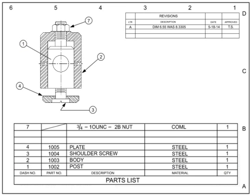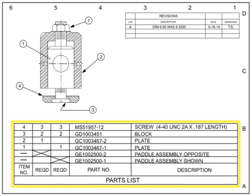Other useful information typically found in the parts list includes material, material specs, heat treatment requirements, size, weight, flag note indicators, and finishing processes. For drawings that show multiple configurations of an assembly, additional columns indicate the quantities of sub-components that make up each assembly. An X will indicate the appropriate quantity column per assembly. For the assembly labeled Paddle Assembly Shown, the quantity column is on the right; for the Paddle Assembly Opposite, the quantity column is on the left.